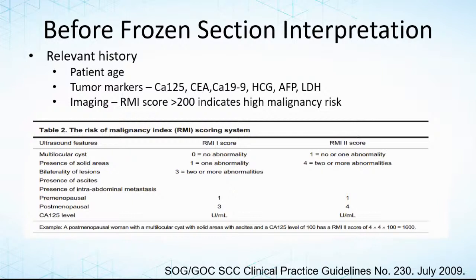Before frozen section interpretation, patient age is always important, particularly if you have a young patient, because your consideration between an epithelial malignancy versus a germ cell tumor may be relevant. Always for the same reason, it's important to know some of the tumor markers if they are available — for germ cell tumors, things like HCG, AFP, LDH. For epithelial malignancies, although there are some pitfalls I will discuss later, CA-125, CEA, and CA19-9. If available, there's also the RMI score, which stands for Risk of Malignancy Index score, if your clinicians use it.